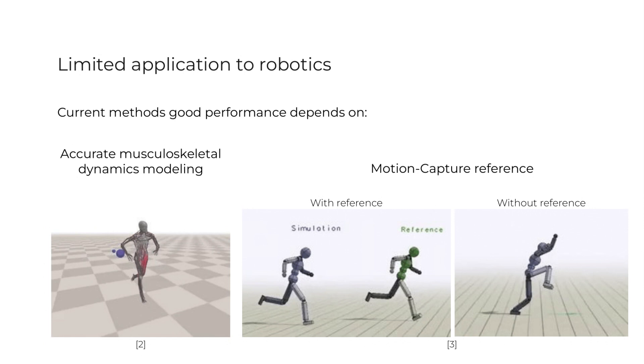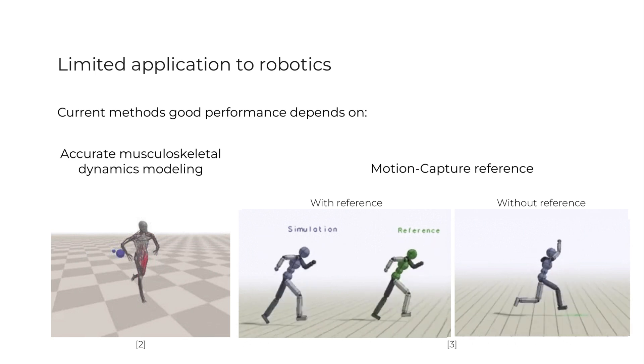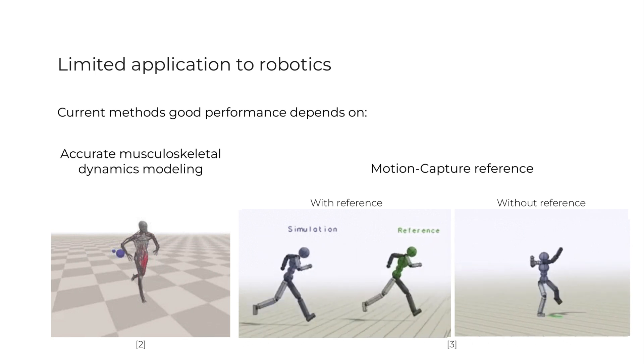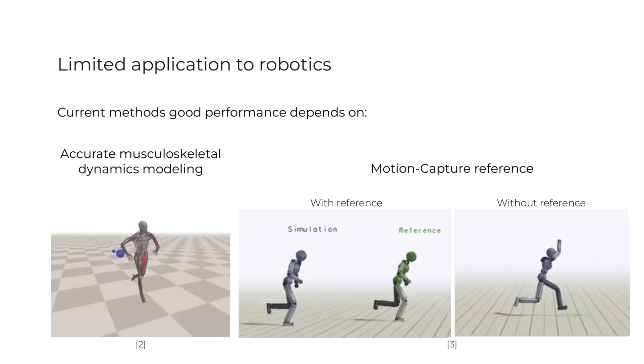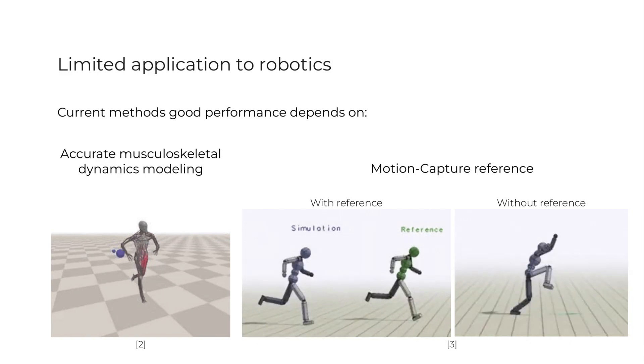The main limitation for the application of these learning techniques to robotics is that in order to converge to realistic behavior, there is a need to have either accurate musculoskeletal models that impose constraints in the simulation dynamics, or the use of motion-capture data, which is unavailable in robotics, to guide the learning and exploration process.